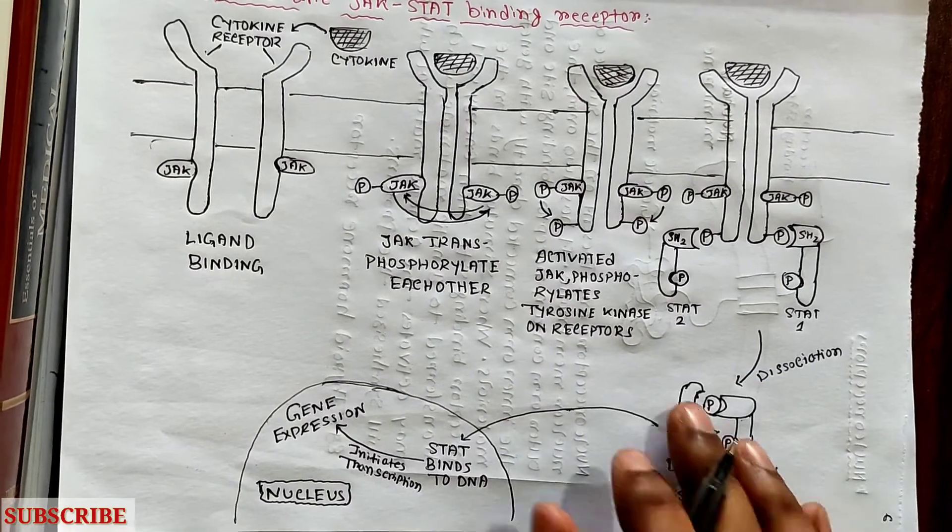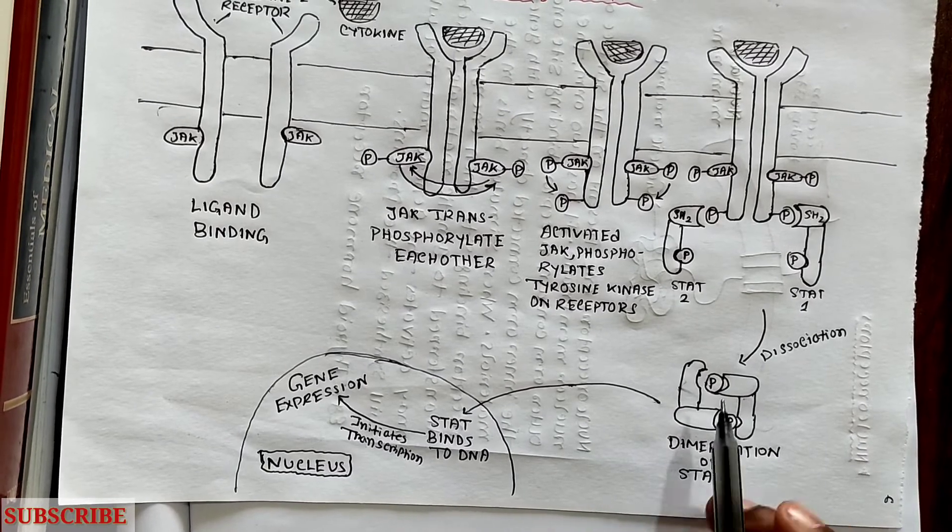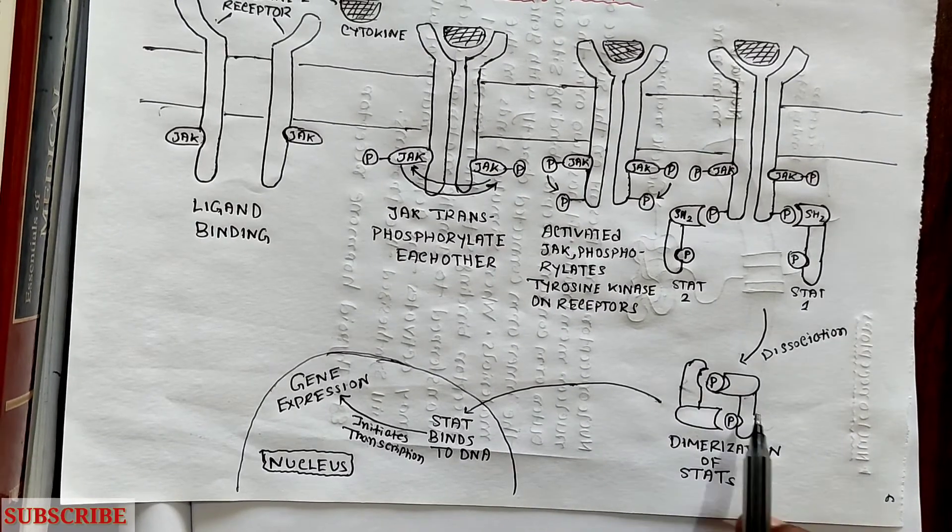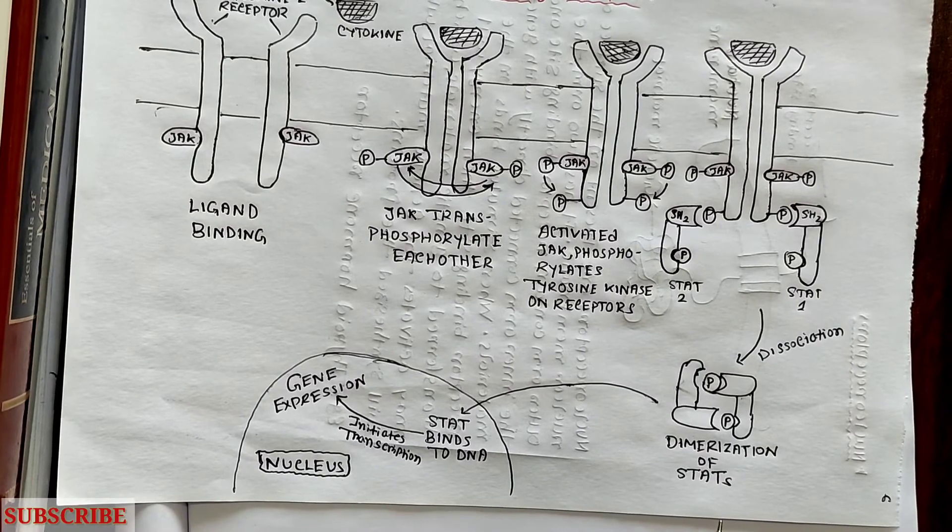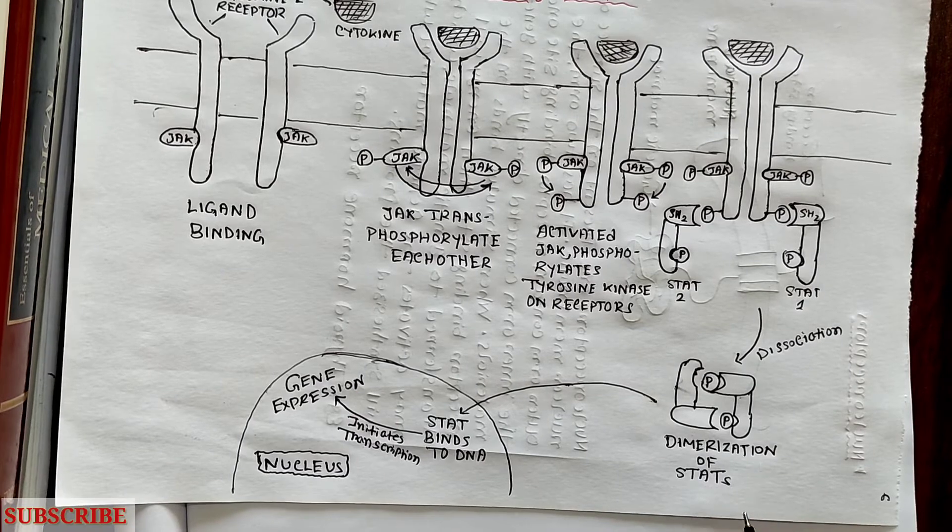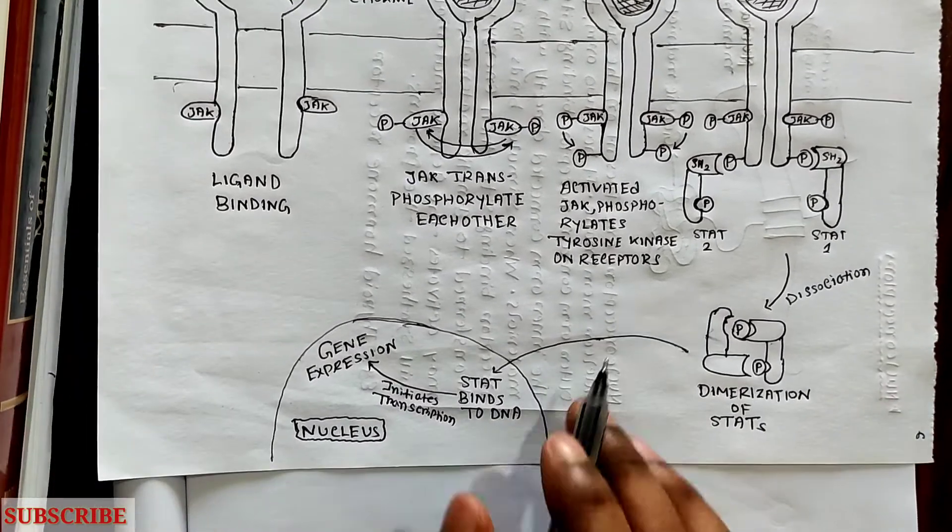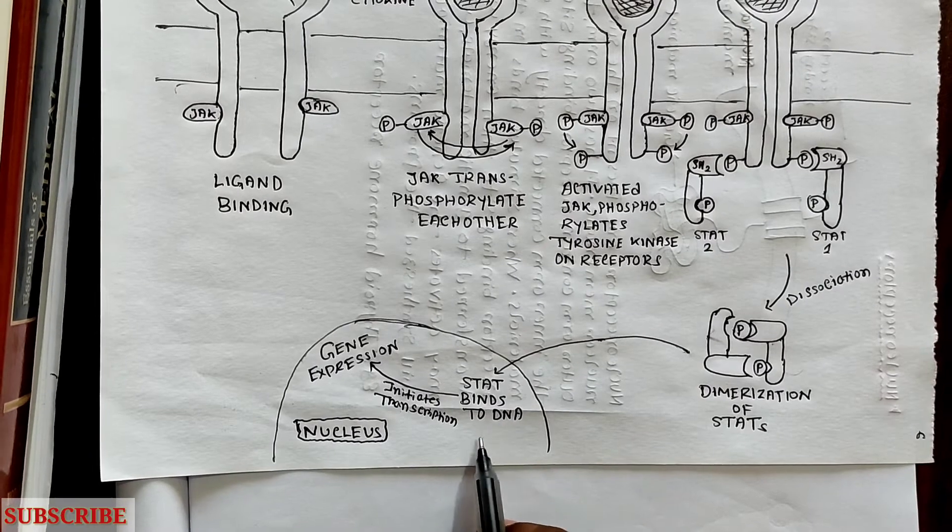If both the STAT are same, then it will form a homodimerization. If the STATs are different, it will form a heterodimerization. Then it will translocate to nucleus and binds to DNA and initiate transcription and hence gene expression.